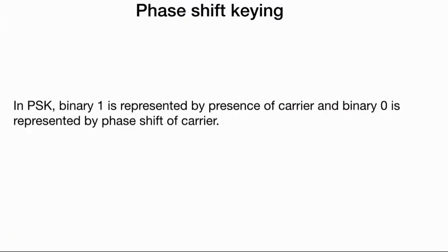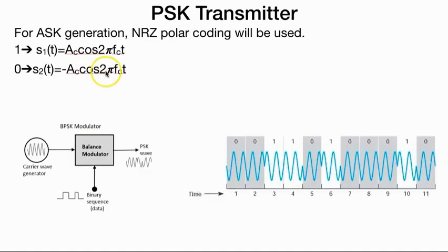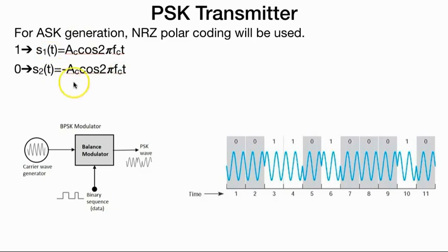In Phase Shift Keying (PSK), binary 1 is represented by presence of carrier and binary 0 is represented by a phase shift of the carrier by π. If you add cos(2πFct + π), it becomes minus cos(2πFct). This minus is obtained by a phase shift. In the diagram you can clearly see the phase shift from 0 to 1 and from 1 to 0.